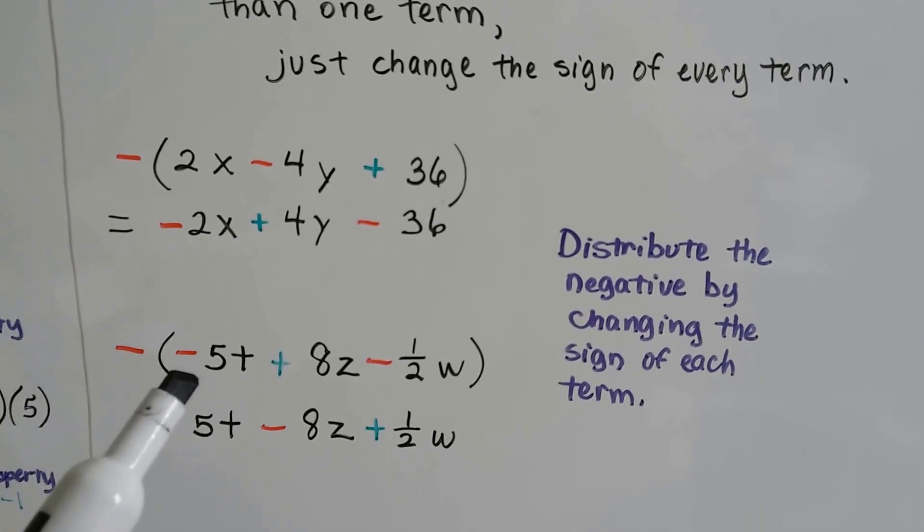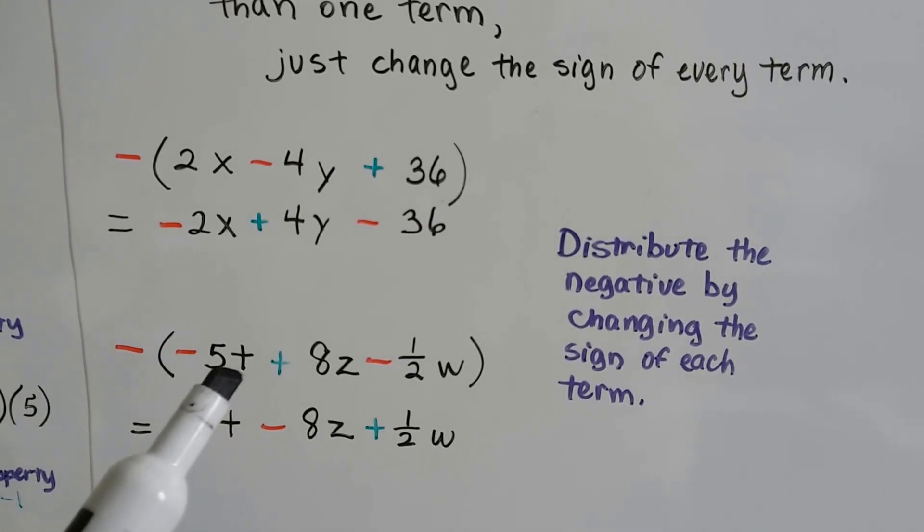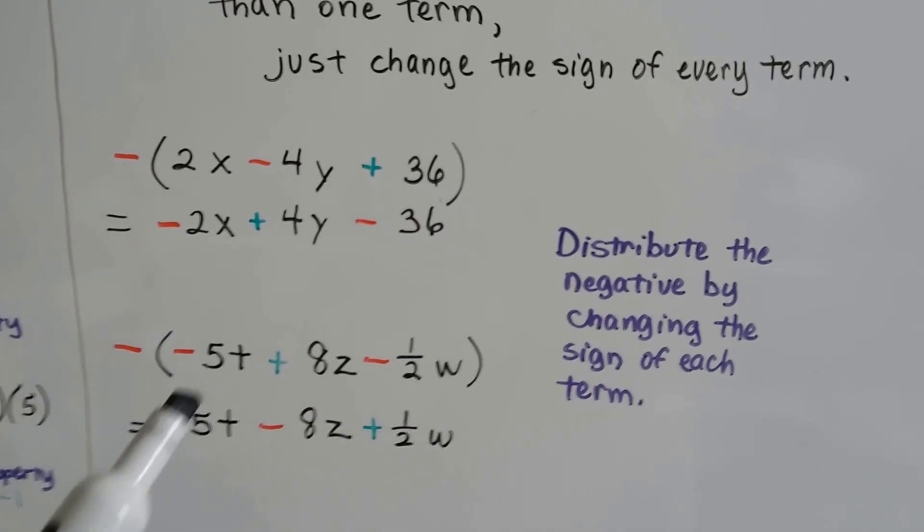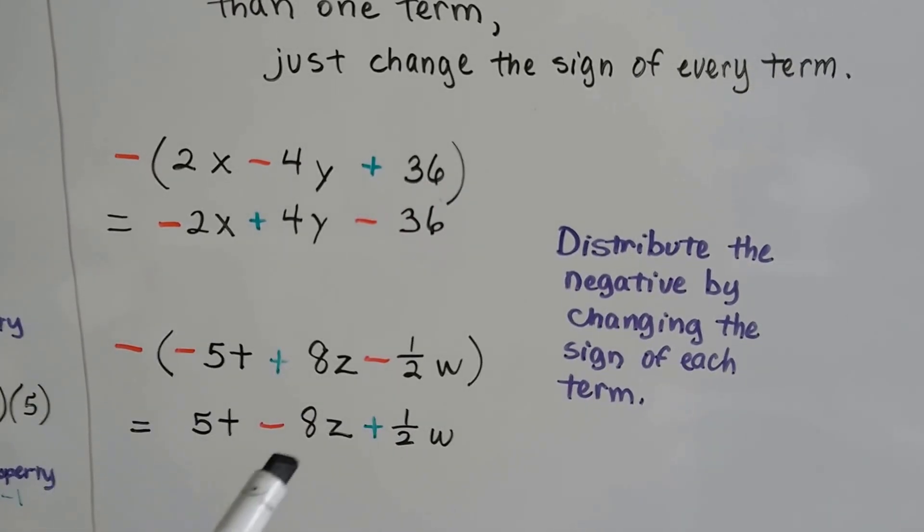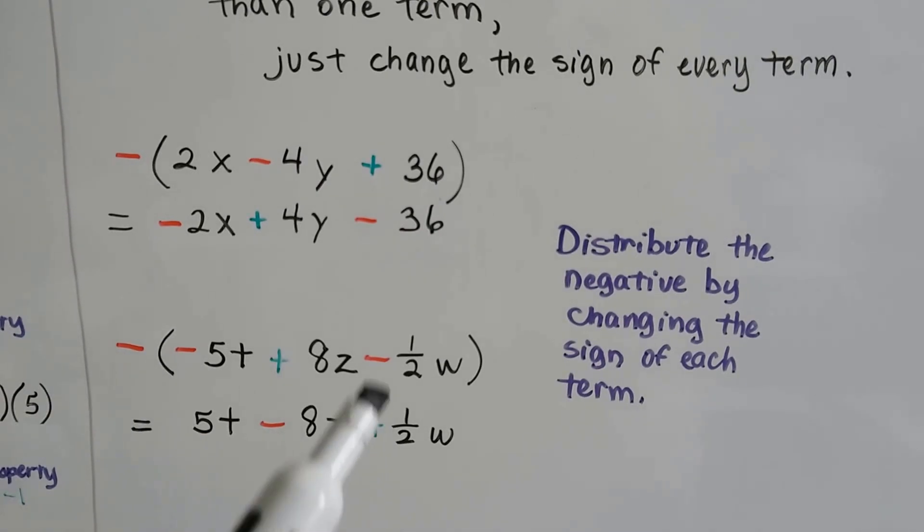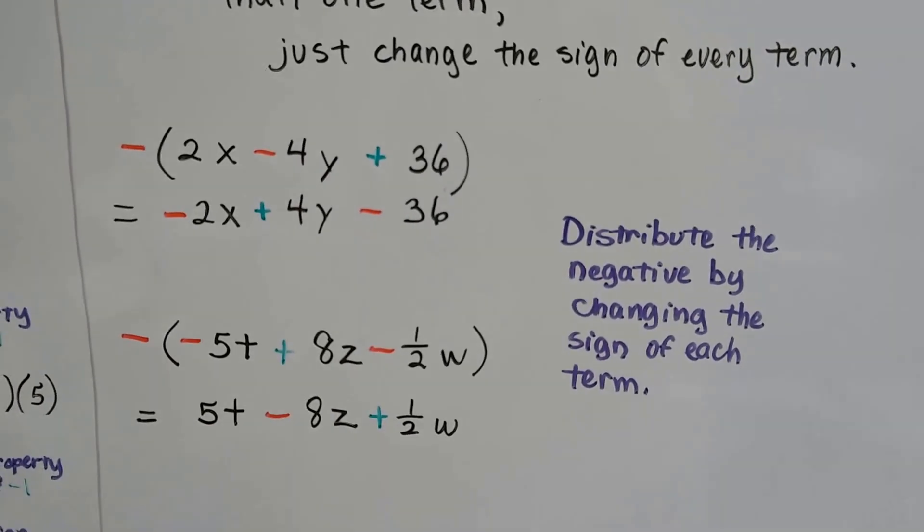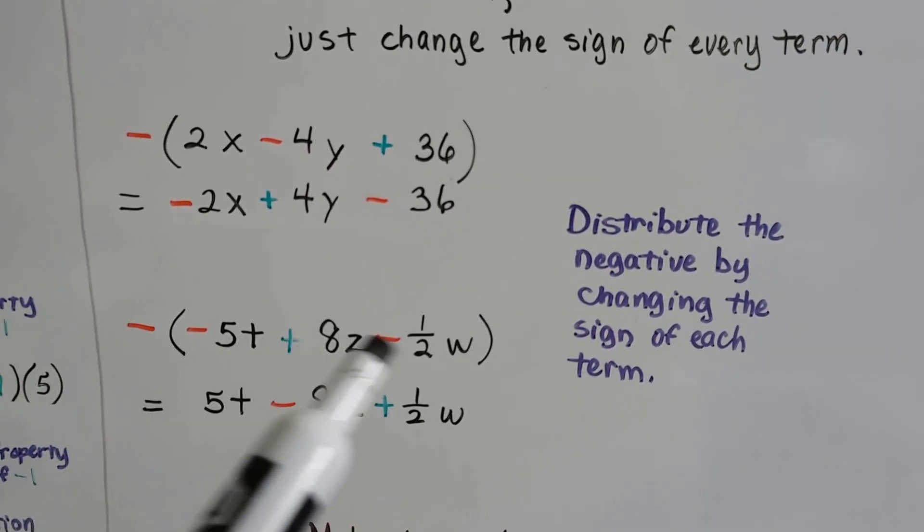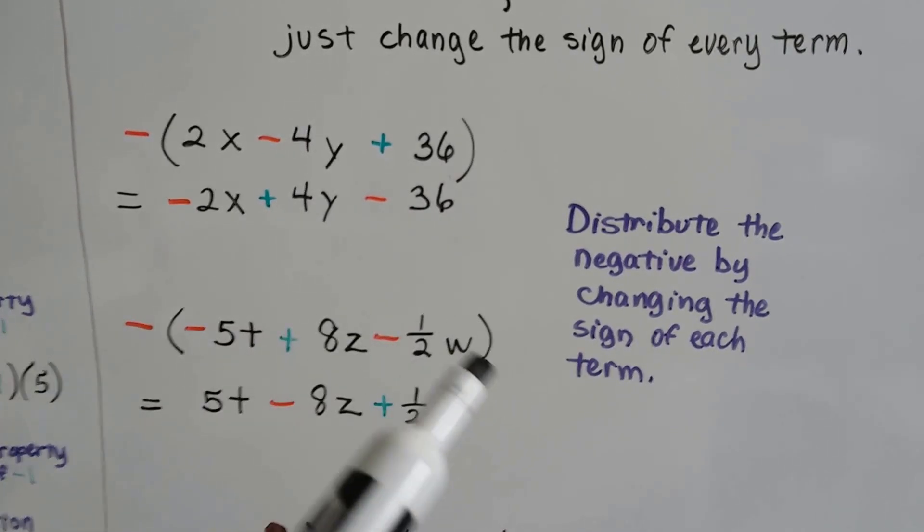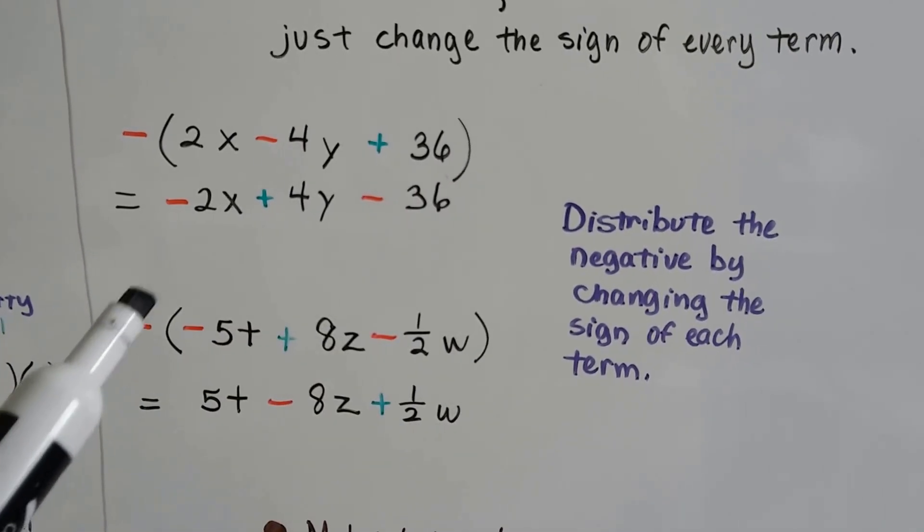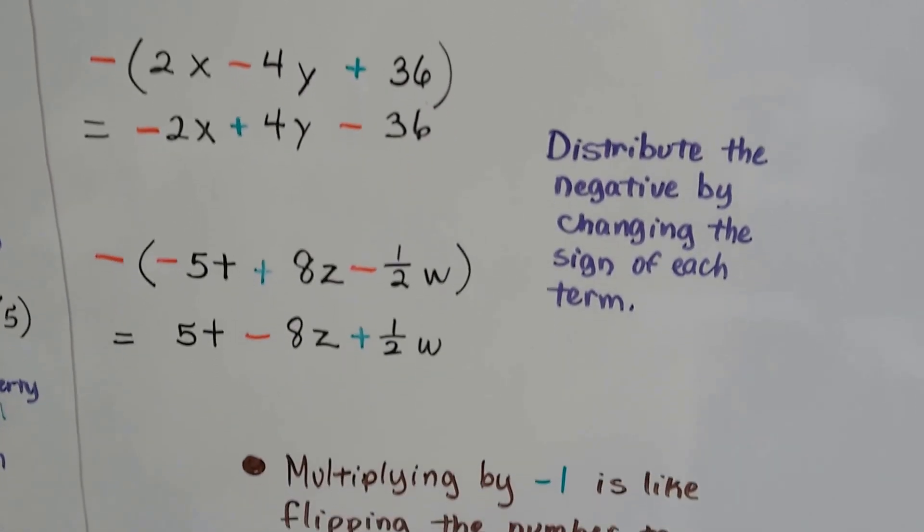When we have a negative outside of the parentheses of this negative 5t plus 8z minus half w, we end up with positive 5t minus 8z plus half w. Just changing the signs. That's all. So by doing the distributing of this negative, we're just changing the signs.